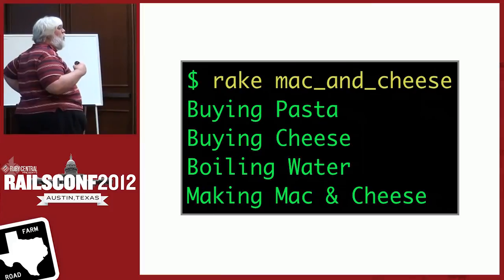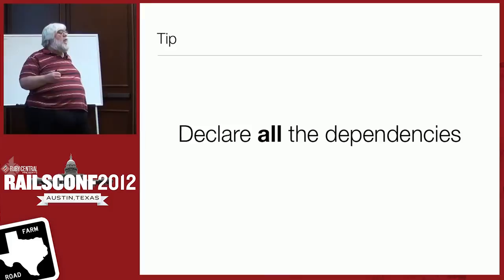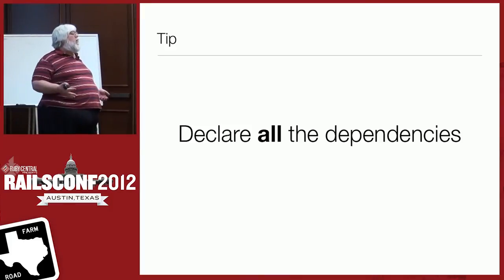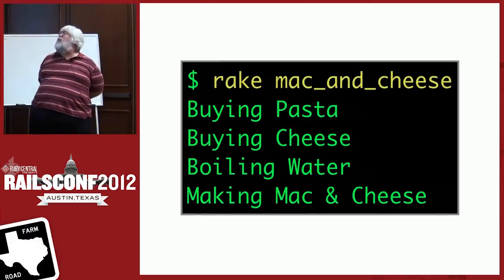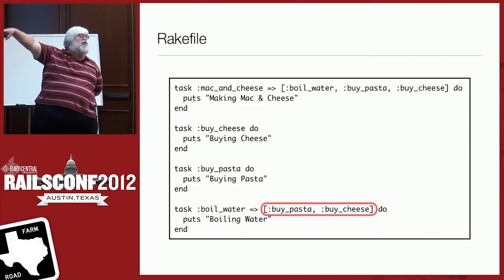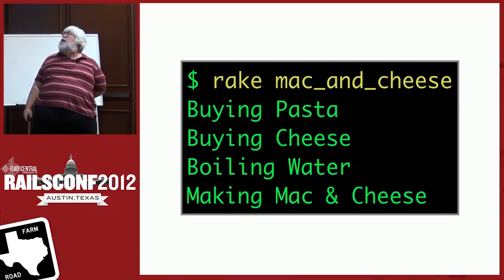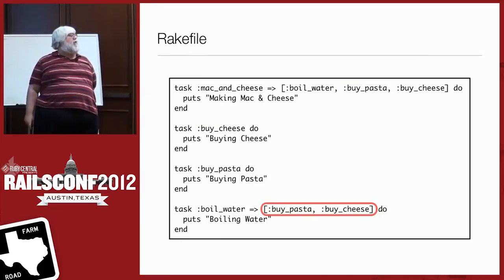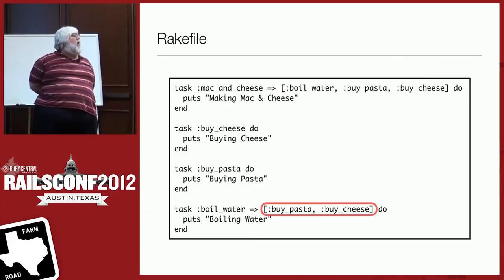Getting the dependencies right is important in rake. Tip: declare all the dependencies. If something must be done before any other task, make that an explicit dependency and declare it. Rake will magically make sure things get done in the right order. And since each task is individual, you can invoke individual tasks or invoke the big task and have everything done.